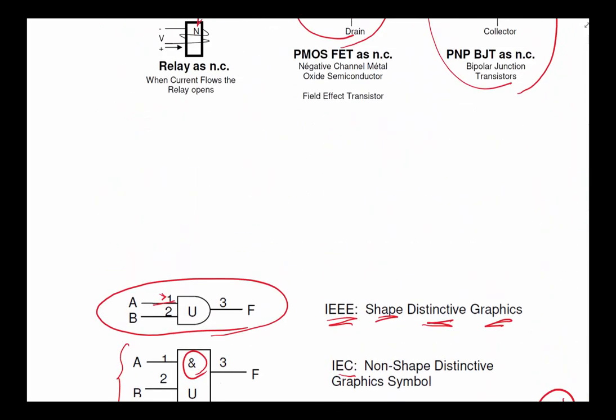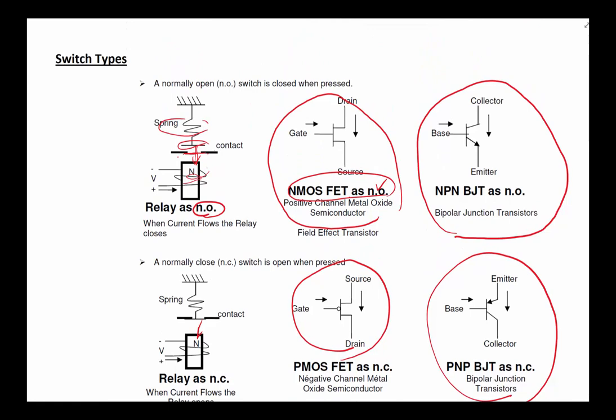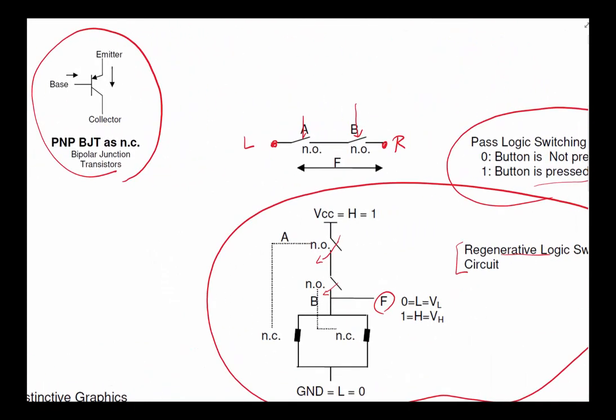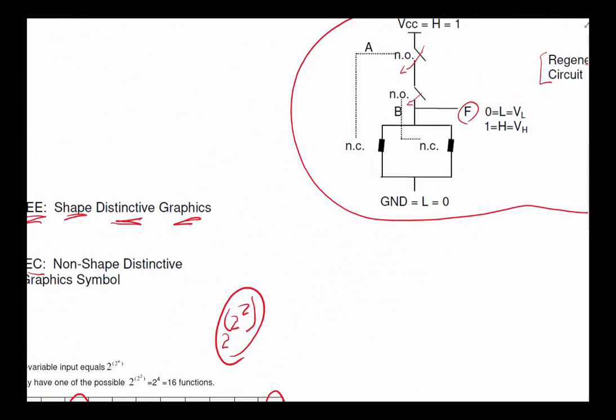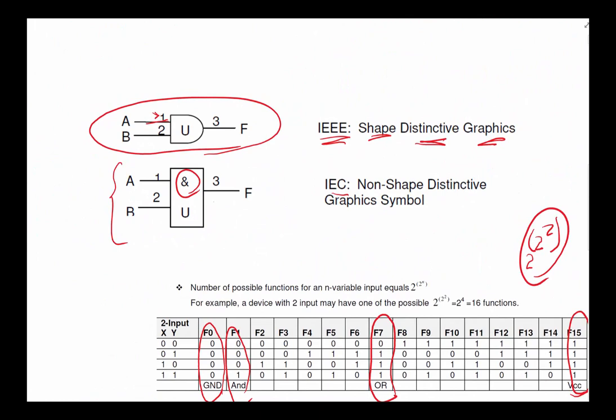So this brings us to the end of a kind of a more or less a smorgasbord of different topic, which we needed to kind of do a presentation to you at this point. Basically talked about switches, different kinds of electrical switches. We talked briefly about different logic, the pass through logic or the regenerative logic and how they work. A little brief discussion of you have a choice of using shape distinctive graphic for your stuff or just use a non-shape distinction. Basically use a box and number it and inside the box say what kind of a device you have.